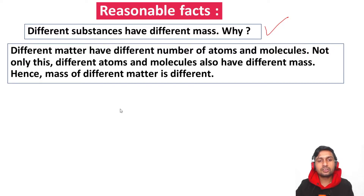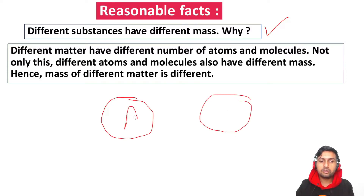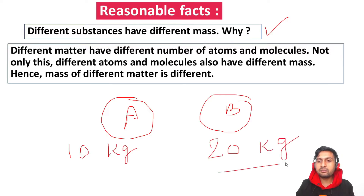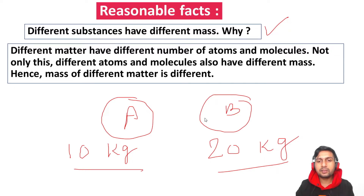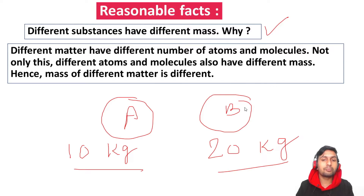Let's assume substance A has a mass of 10 kg and substance B has a mass of 20 kg. Comparing them, B has more mass because it has more atoms and molecules. The number of atoms and molecules determines the mass of a substance.